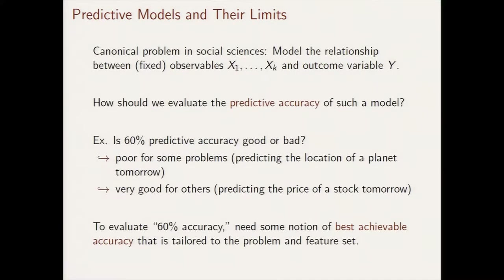I want to think about a canonical problem in the social sciences, which is to model the relationship between some set of measurable covariates — I'll call them x1 through xk — and some outcome of interest y. The focus of our paper is on this question of how we should evaluate how well a given model does in prediction. The challenge is that the same objective level of predictive accuracy can mean very different things in different problems.